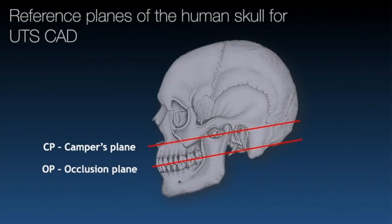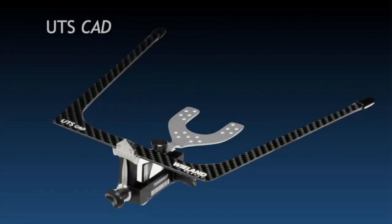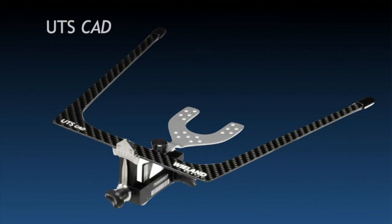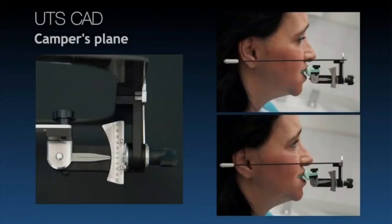The BPS and digital denture revolve around the Camper's plane, not the Frankfurt plane. Camper's plane is supposedly parallel to the occlusal plane. We use the UTS card to record this — it's essentially like a fancy, adjustable Fox's plane. We attach it to a bite fork and use the two adjustable knobs to line it up with Camper's plane. The front has little readings — plus one, plus two, plus five — and we adjust it to level with the patient's Camper's plane.